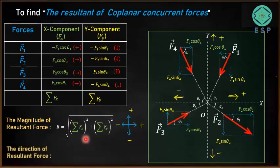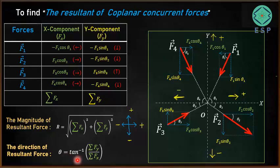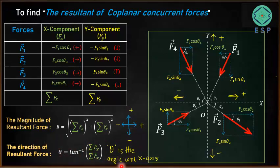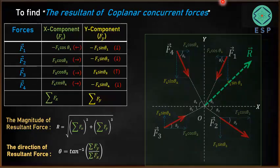Now we find the direction of the resultant force. The direction is given by theta, which is the angle made by the resultant with the positive direction of the X axis, and it is given by: theta = tan⁻¹(ΣFy / ΣFx). This is how we find the resultant — both its magnitude and direction — for a given system of coplanar concurrent forces. The entire system is transformed into a single resultant force R having the magnitude given by the formula and the direction given by this angle.